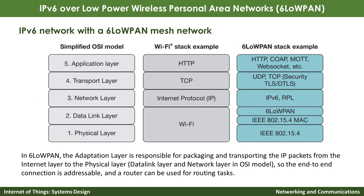This diagram compares the 6LoWPAN stack against the simplified OSI model as well as the Wi-Fi stack. As you can see, 6LoWPAN works within the data link layer. We call it the adaptation layer, which is responsible for packaging and transporting IP packets from the Internet layer to the physical layer across the data link layer. By doing so, it enables end-to-end connection with Internet-addressable routing.